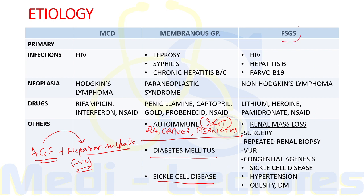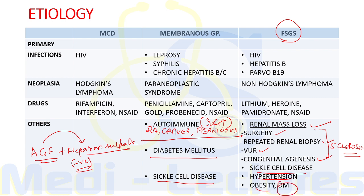For focal segmental glomerulosclerosis, any cause that leads to sclerosis in the kidney can cause this pathology. These include renal mass loss from renal surgery, repeated renal biopsy, vesico-ureteric reflux, and congenital agenesis of the kidney. Other disorders include sickle cell disease, hypertension, obesity, and diabetes.